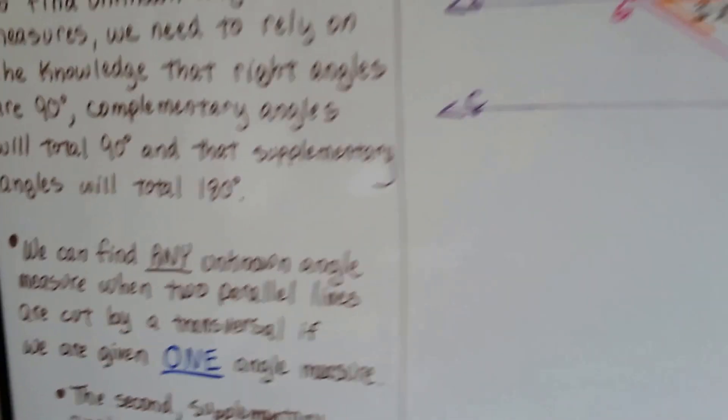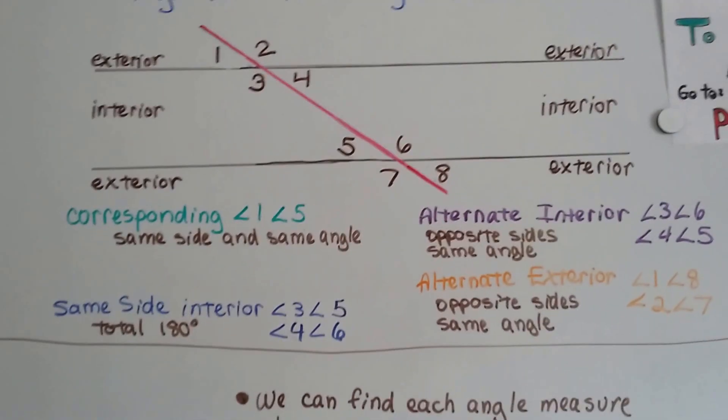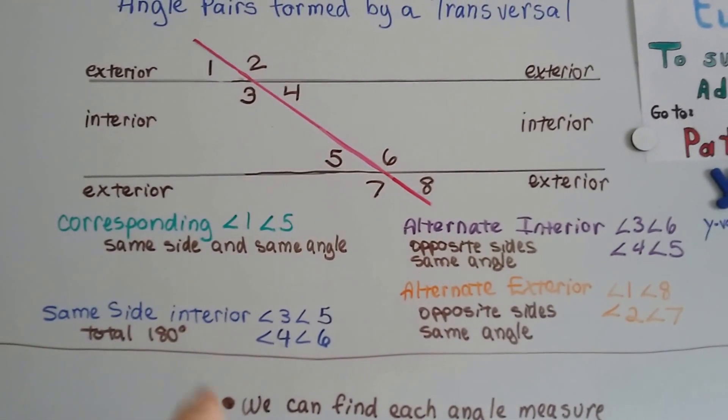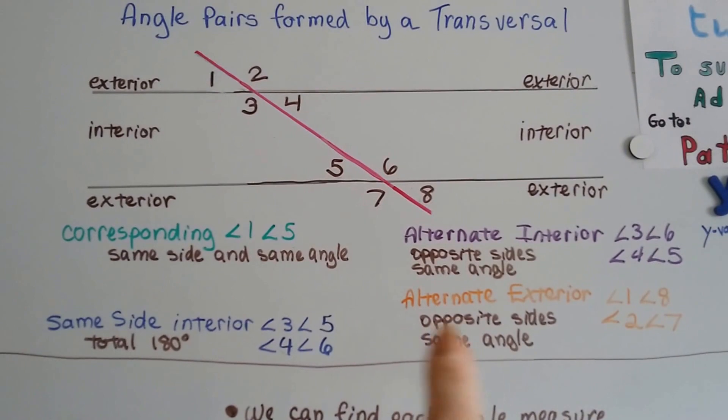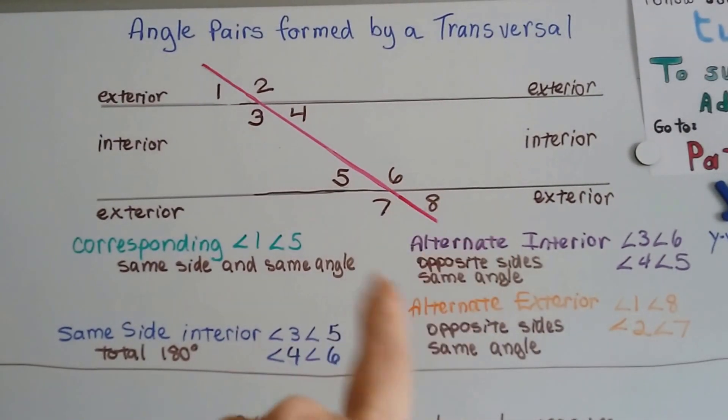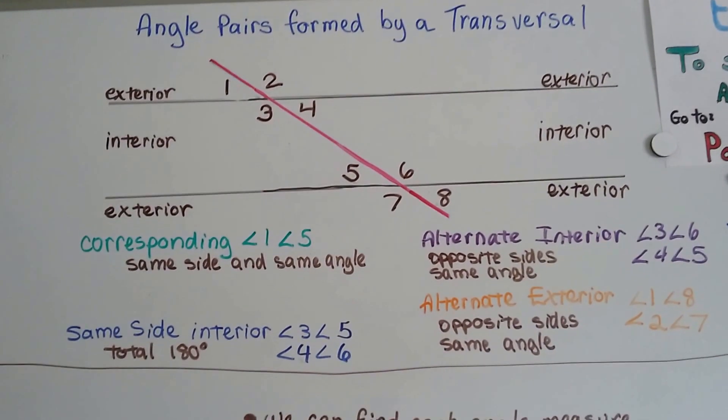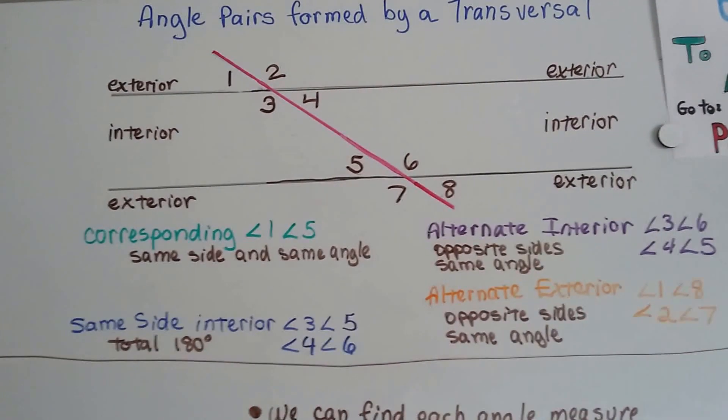We also can find unknown angle measures by knowing the rules for corresponding angles, same-side interior angles, alternate interior or alternate exterior angles. If you know what these are, it'll help you find a missing angle measure and prove that it's the correct measure.